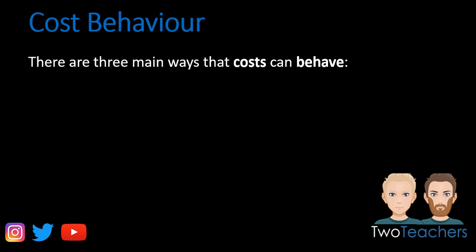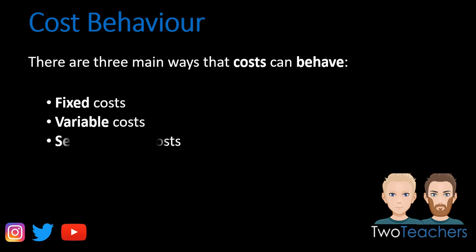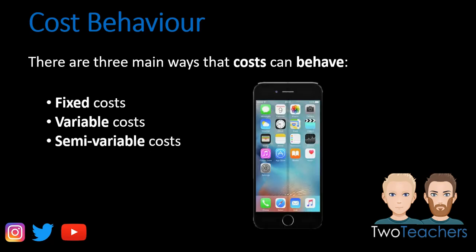There are three main ways that costs can behave: you've got fixed costs, variable costs, and semi-variable costs. To illustrate these, we are going to look at a mobile phone and see how cost behaviour impacts you in general day-to-day life.